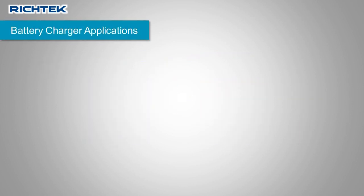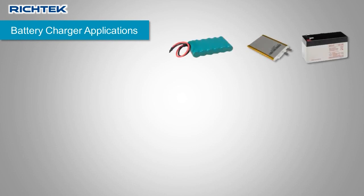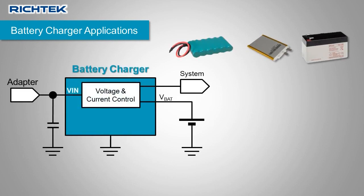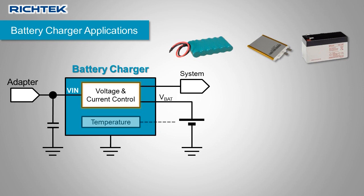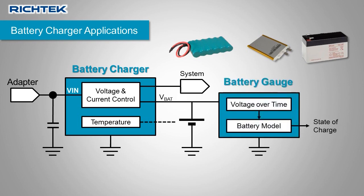If your application contains a rechargeable battery, you will most likely also need a circuit to charge the battery. Battery charger ICs are normally powered from an adapter and will provide accurate charging voltage and charging current control for the specific battery in your application. They also monitor the battery temperature to ensure safe charging conditions. Some battery charger ICs include power path control to allow the system to run from either the adapter or the battery. You can also add a battery gauge IC, which measures battery charge and discharge conditions and provides accurate state of charge information to your system.